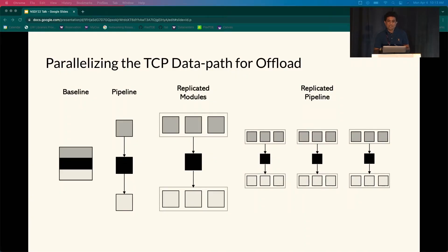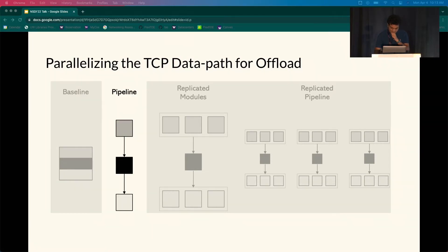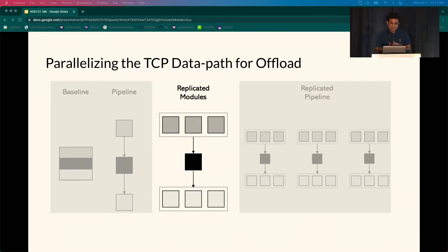Flexto supports different levels of fine-grained parallelism in its data path. This figure shows three modules for simplicity, but other modules are also sharded or replicated. The baseline is the monolithic sequential design of conventional TCP stacks, where a single core runs all TCP processing. Flexto breaks down TCP processing into fine-grained modules that execute in a parallel pipeline, where each module can process TCP segments in parallel with high-latency memory accesses and data transfers. These modules are replicated on multiple cores and may process segments of the same connection out of order, leveraging Flexto's reordering for correctness.